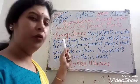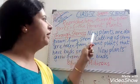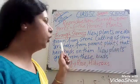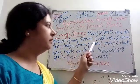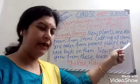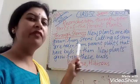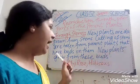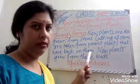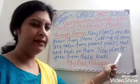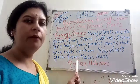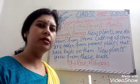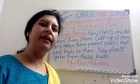First, through stems. New plants are also grown from stems. Cuttings of stems are taken from parent plants that have buds on them. New plants grow from these buds. Example: rose and hibiscus.